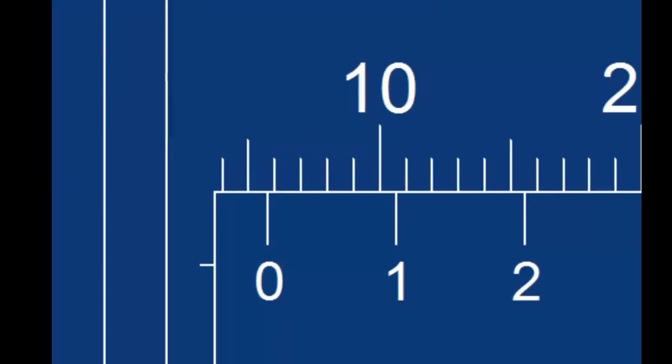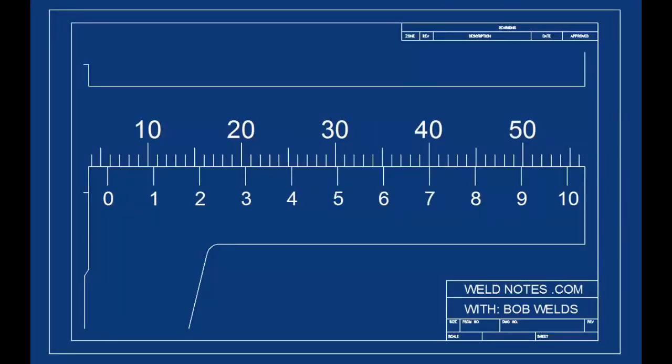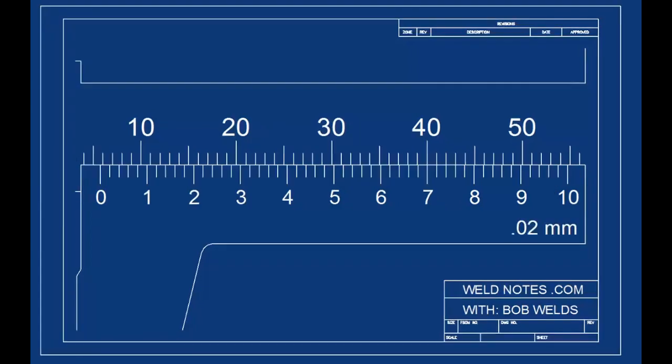Now, do you see the mark that lines up better than the rest? It looks like the seven is lining up. The seven means 0.7 millimeters. But this caliper can measure even more accurately than that. I'll redraw all the marks and let you look again.